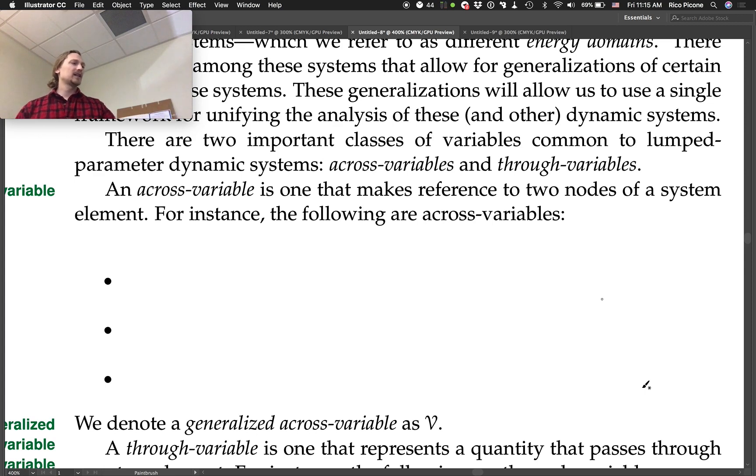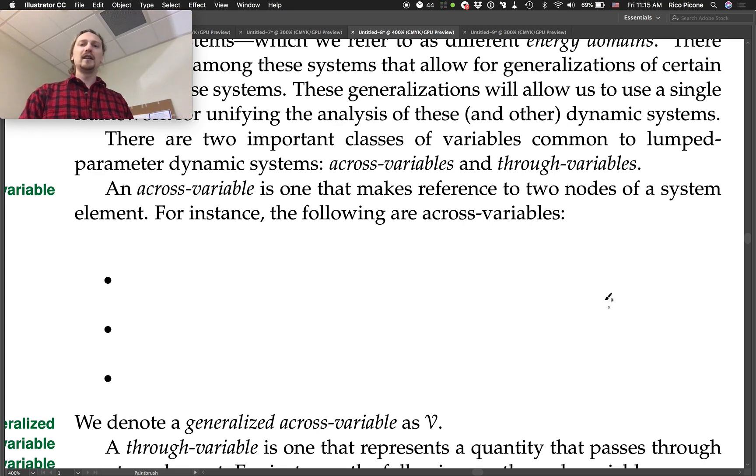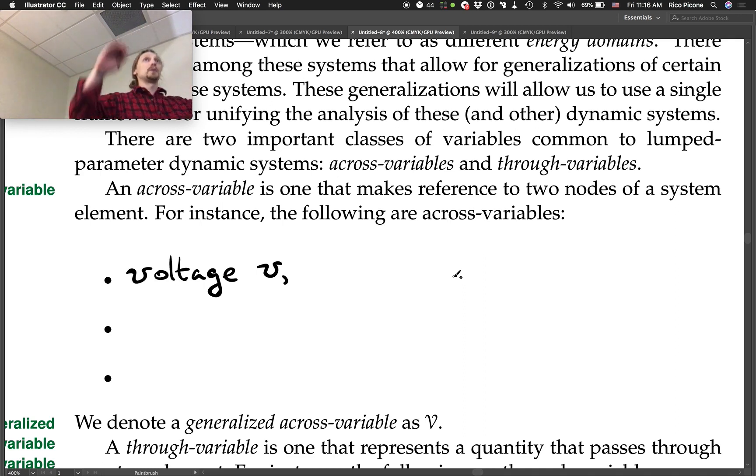So for the electronic energy domain, which variable do you think? So we're specifically going to be labeling these for power flow variables. Which power flow variable in the electronics energy domain do you guys think needs reference to two nodes to be defined? Voltage. Great. Voltage. Remember, we discussed how voltage is only defined between two points.